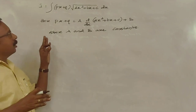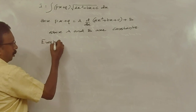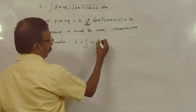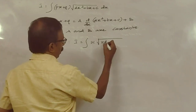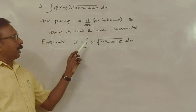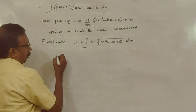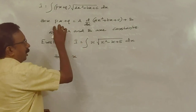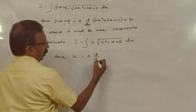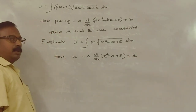Let us discuss this with an example. Evaluate I is equal to integral of x into root of (x² - x + 5) dx. Here the expression x is written as A into derivative of (x² - x + 5) plus B.